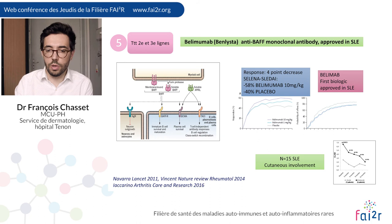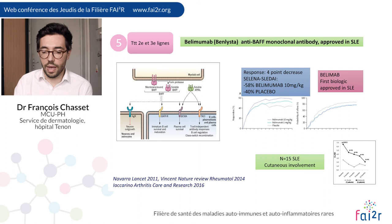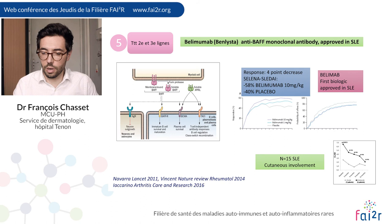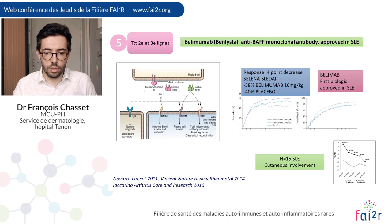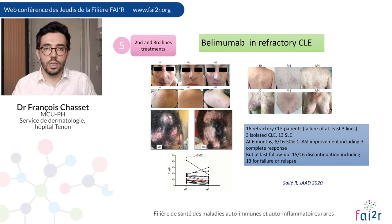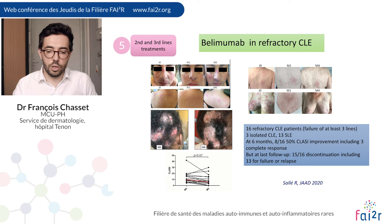Belimumab is an anti-BAFF monoclonal antibody and the first biologic approved in SLE. There is very little data regarding cutaneous involvement in SLE patients treated with belimumab — only a small series of 15 patients from an Italian cohort showing improvement in acute and subacute lupus patients, with no data on discoid lupus. In a study of 16 refractory CLE patients, mostly with discoid lupus, at six months half of patients had a 50% improvement of CLASI including three complete responses, but at last follow-up, 15 out of 16 patients discontinued belimumab mostly because of persistent activity.